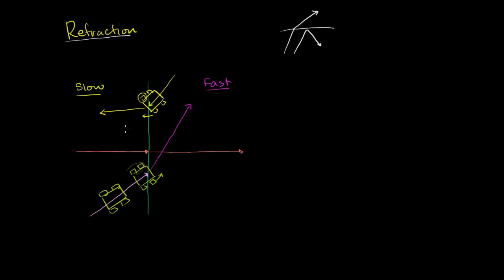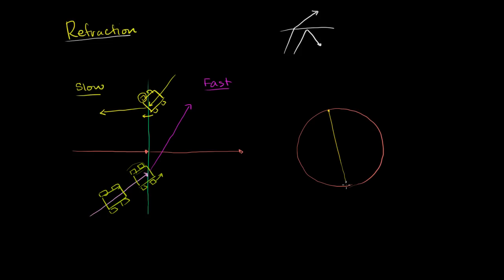That's a primer on refraction generally. Now let's think about what would happen when sound waves are traveling through the Earth — this will help us figure out the actual structure of the Earth. If the Earth was made up of some uniform material and you had an earthquake a little bit below the surface, with uniform density the P waves would just go in straight lines — nothing would refract them. They'd travel straight lines radially outward from where the earthquake occurred.